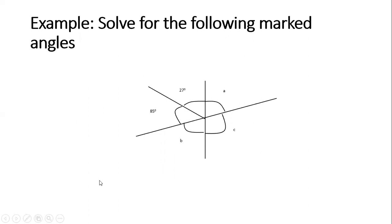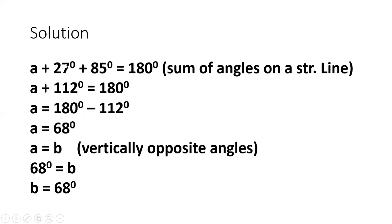Now for an example to drive home these theorems. We have a shape drawn. The first thing to identify is the straight line. We can see that a plus 27 plus 55 equals 180 degrees — sum of angles on a straight line. Adding 27 plus 55 gives 82, so a plus 82 equals 180 degrees, which means a equals 180 minus 82.